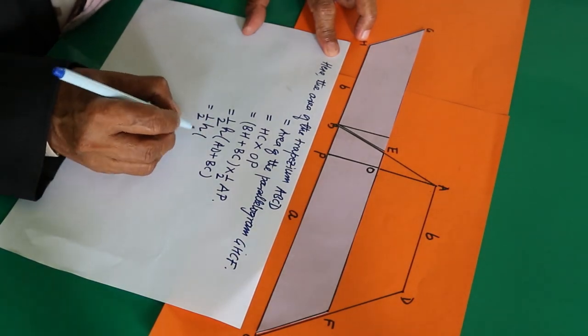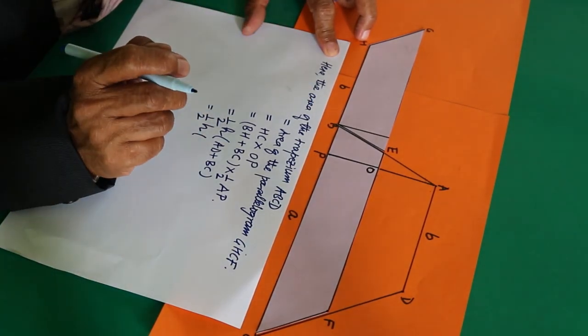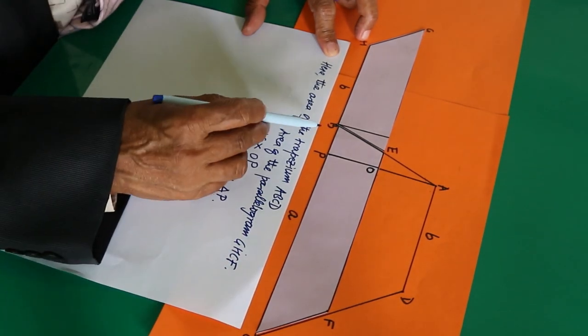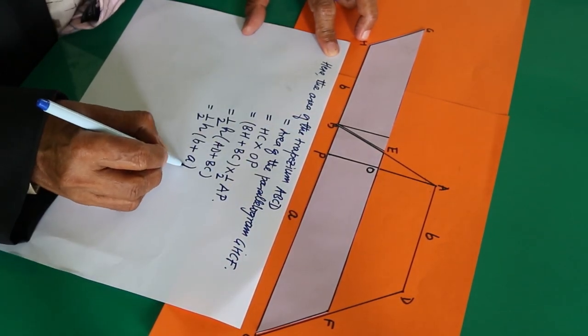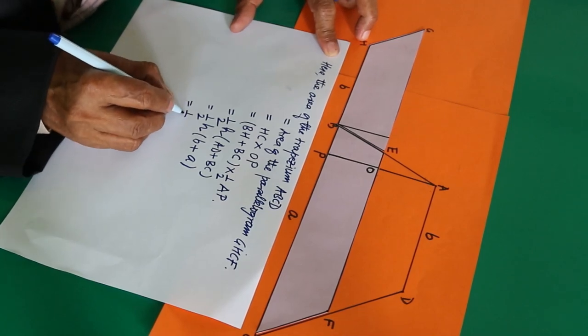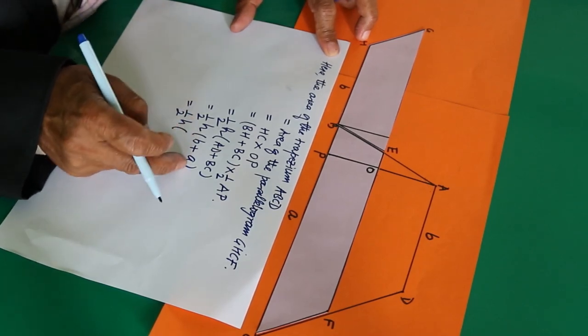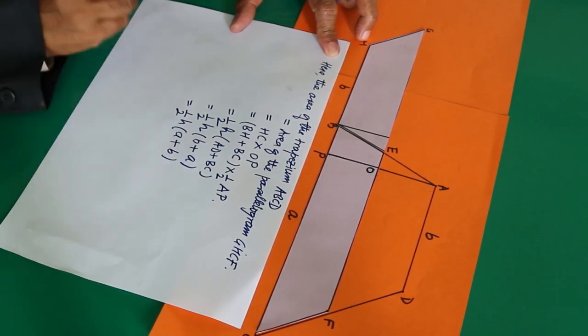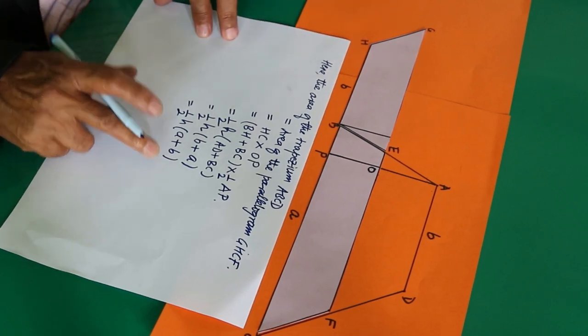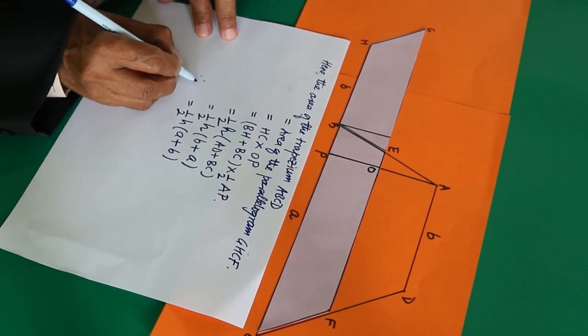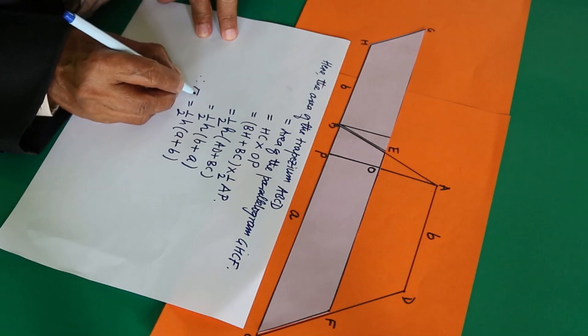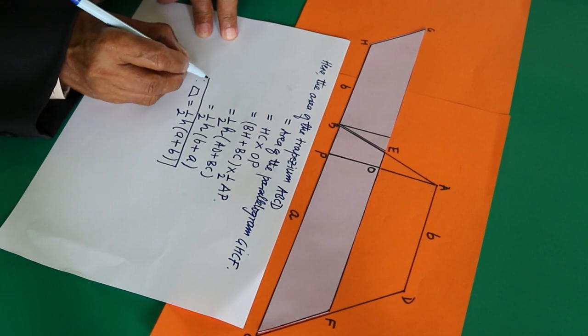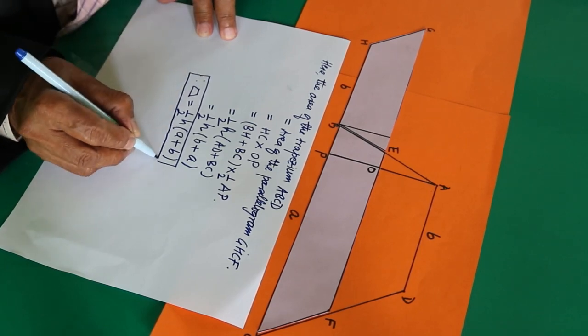Or you can write this as, maintaining the order here, A plus B. Therefore, the area of the trapezium, abbreviated by the trapezium symbol, is this. So we have the same conclusion as our previous video.